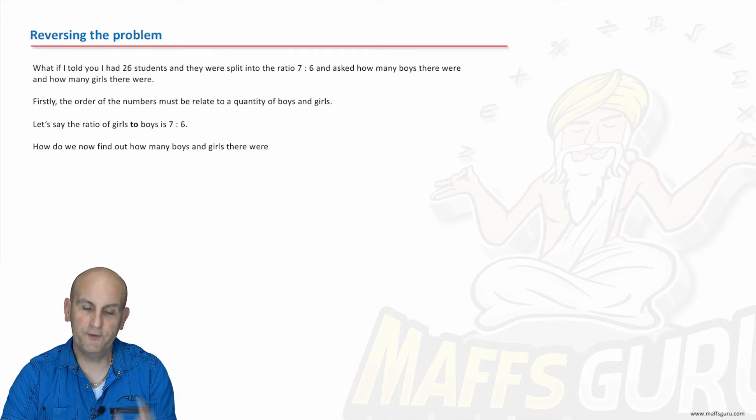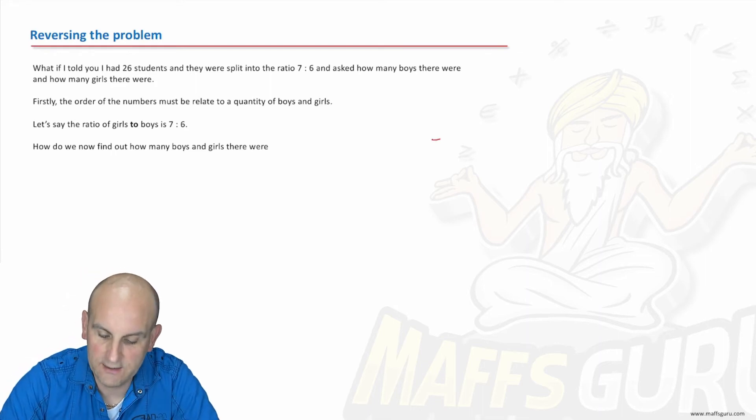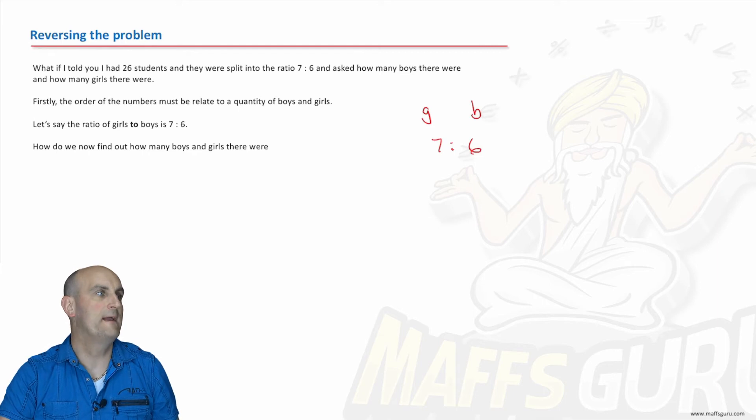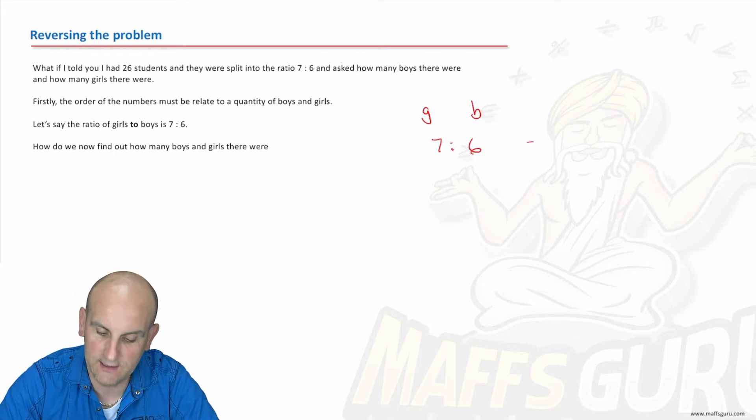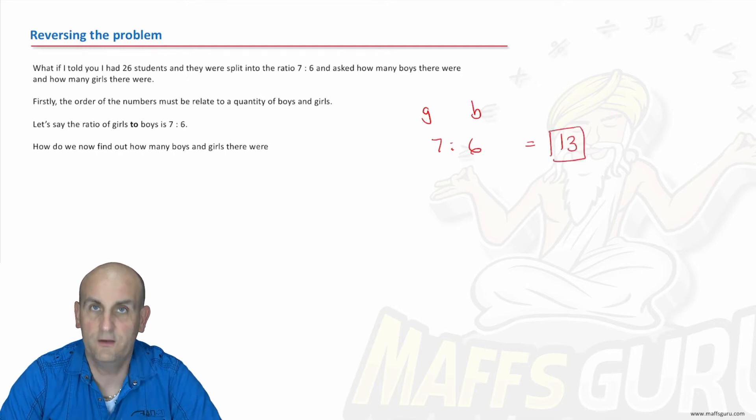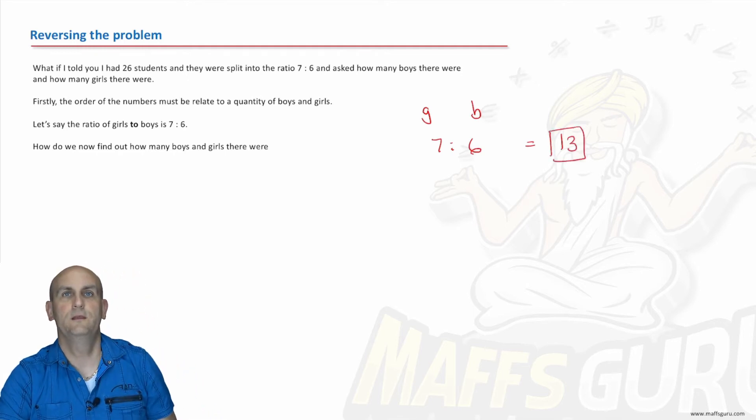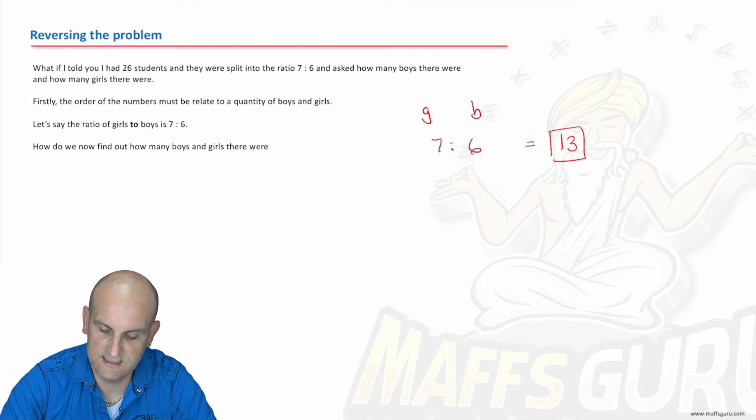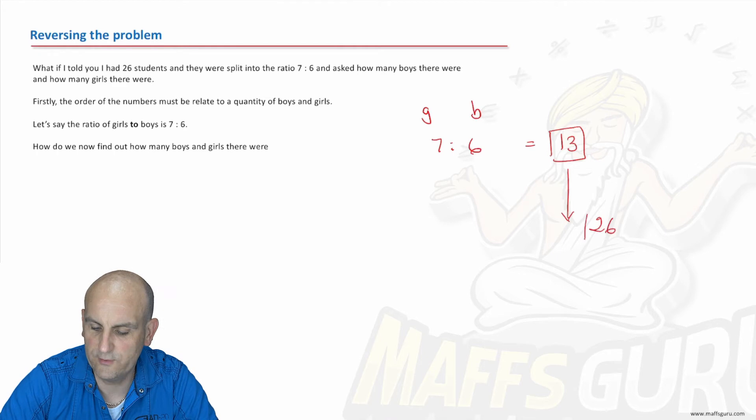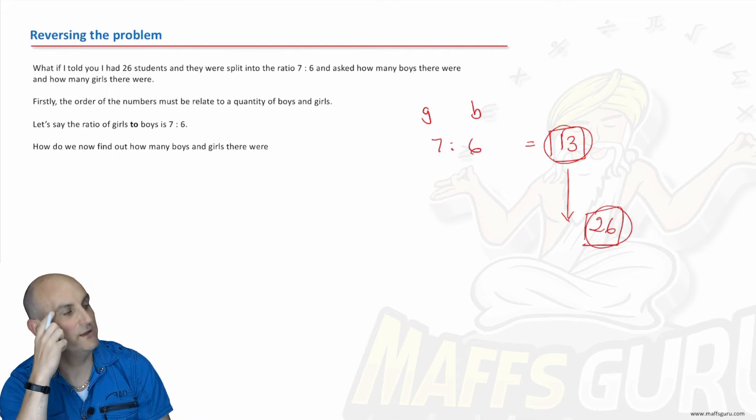So again, reversing stuff in maths, we have to be able to do stuff forwards as well as backwards. And so if I said to you now I had a ratio of 7 to 6, and again we'll just do girls to boys, what I want to know is, for example, how many people are in the room. Well I could turn around and say, well in fact there are 7 to 6 which I would like to say 13 people in the room, but there aren't. There aren't 13 people in the room. There are actually 26 people in the room because the question says I've got 26 people in the room. So if I've got 26 people in the room, how do I go from this 13 to this 26? How do I go from 13 to 26?